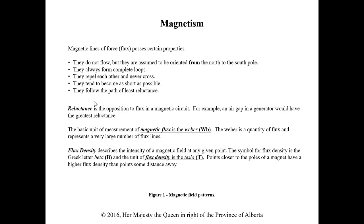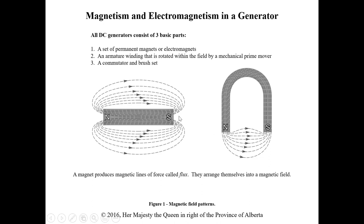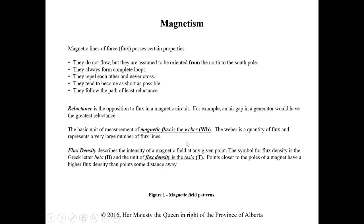The basic unit of measurement of magnetic flux is the Weber — it's a quantity of flux and can be a very large number. Flux density describes the intensity of a magnetic field at any given point. The symbol for flux density is the Greek letter beta or B, and the unit of flux density is the Tesla. Points closer to the poles of a magnet have higher flux density than points farther away. Make sure you know the difference between these so we don't get them confused.